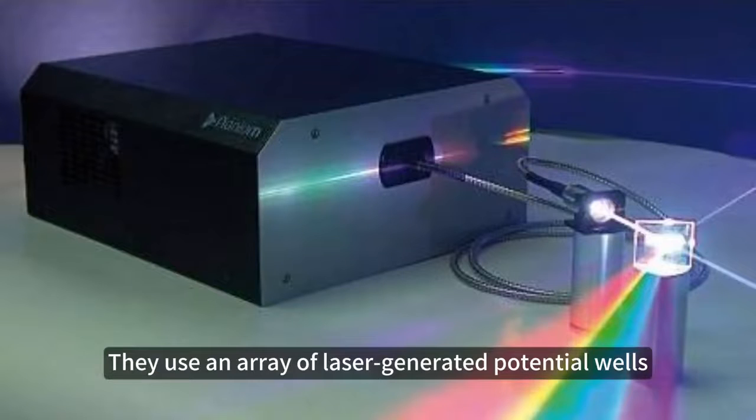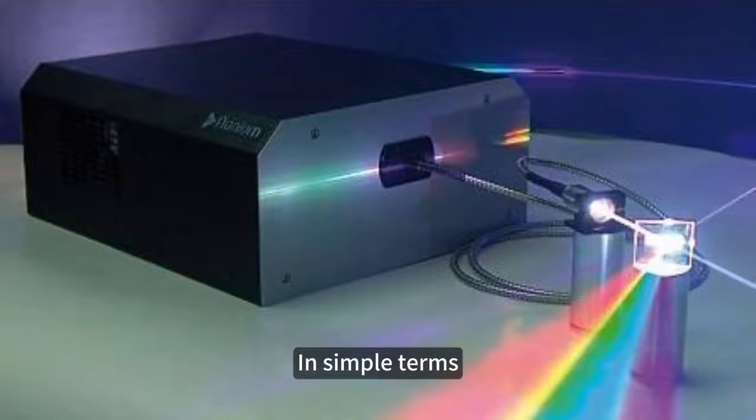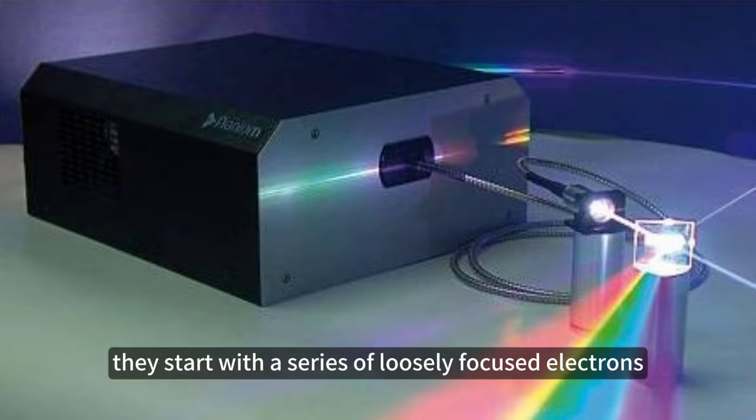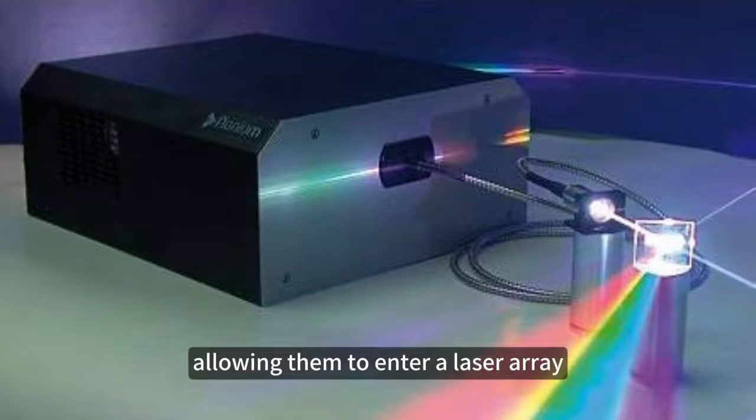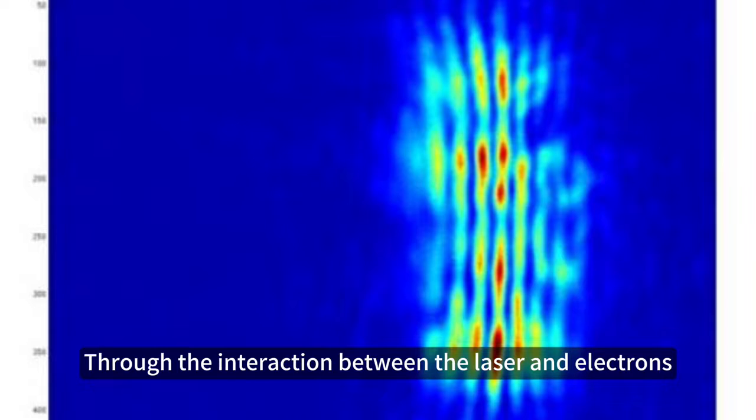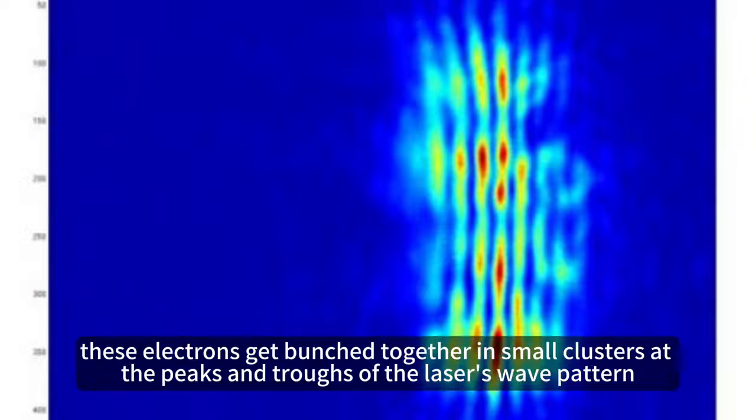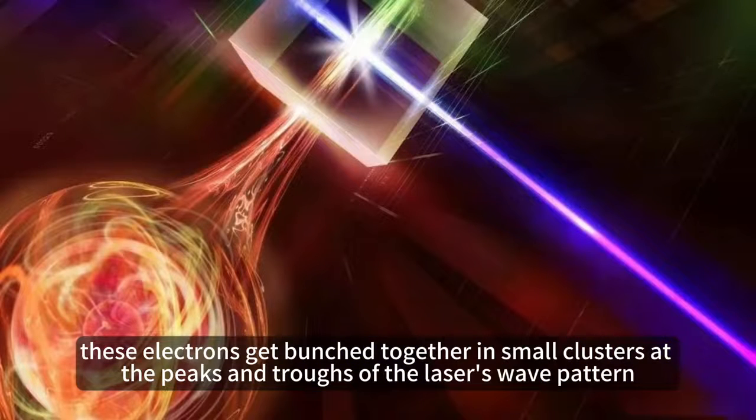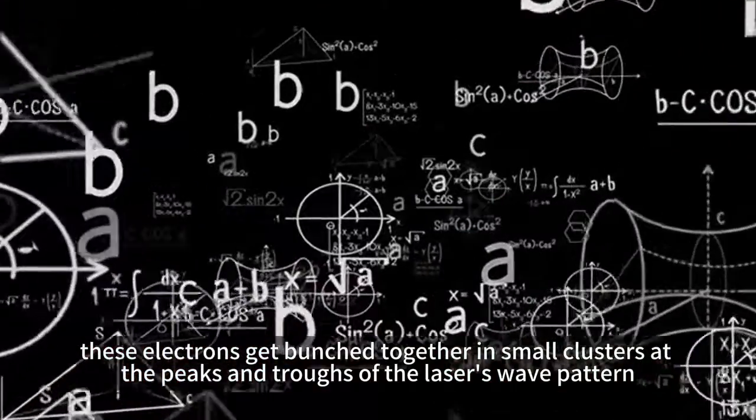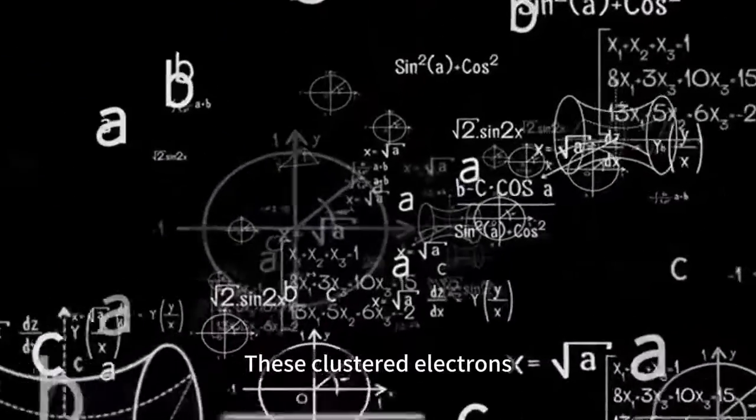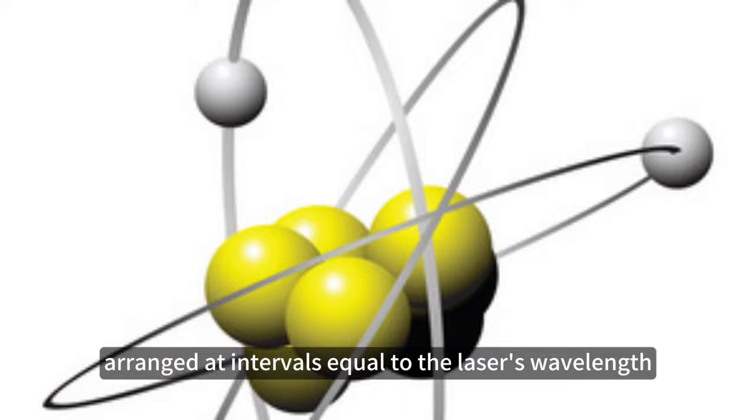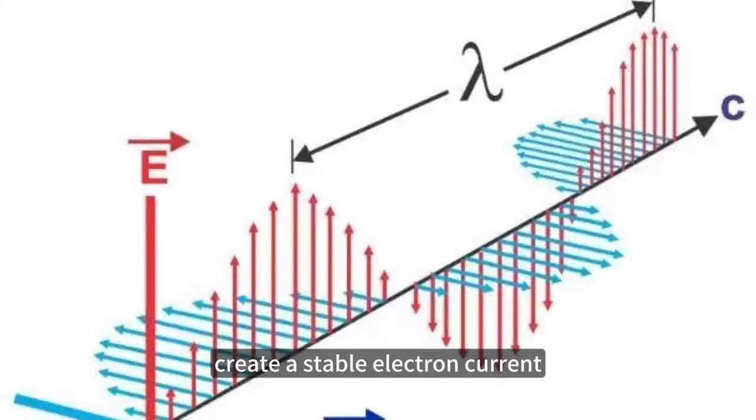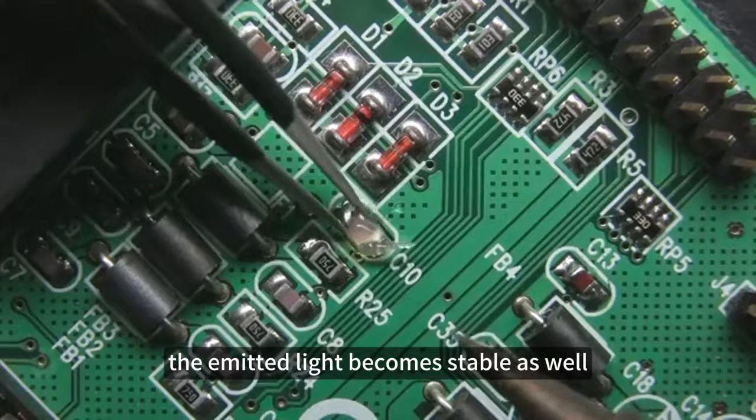In simple terms, they start with a series of loosely focused electrons, allowing them to enter a laser array. Through the interaction between the laser and electrons, these electrons get bunched together in small clusters at the peaks and troughs of the laser's wave pattern. These clustered electrons, arranged at intervals equal to the laser's wavelength, create a stable electron current. As a result, the emitted light becomes stable as well.